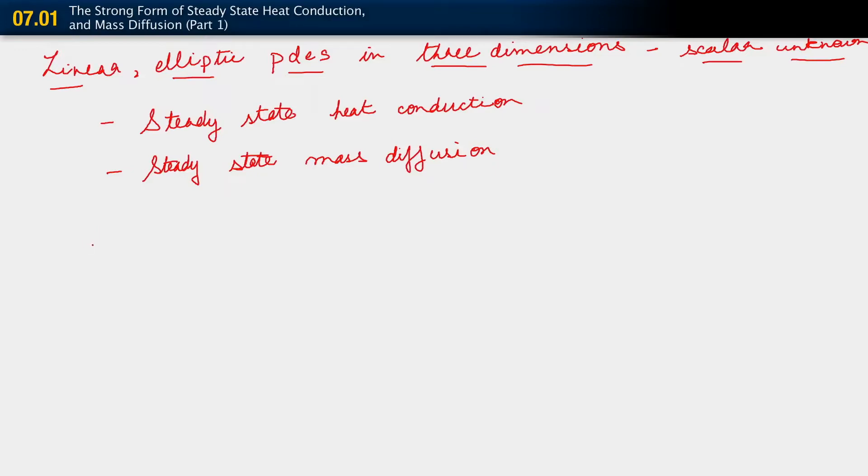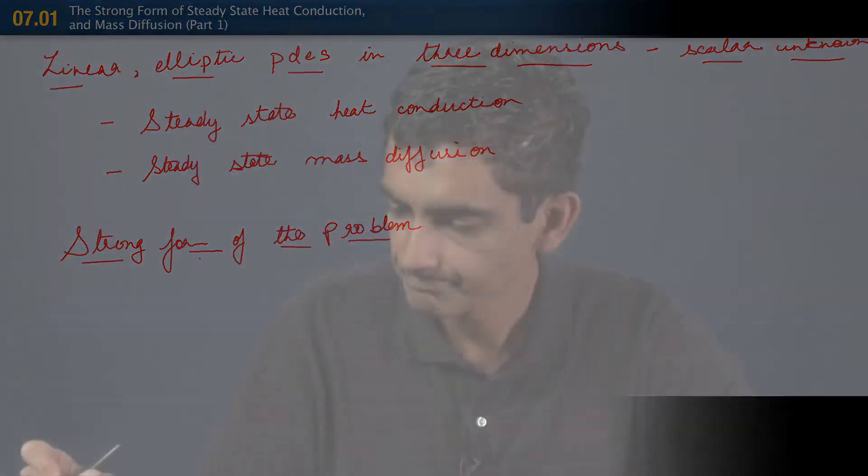We'll start out with the strong form. So before I start writing out the strong form, let me just sketch out the domain that we're trying to solve things on. Just as for the 1D linear elliptic problem, we sketched out this idea of a bar, sort of embedded in a wall, fixed in a wall. Now, because we're doing things in 3D, we are going to make use of vector notation.